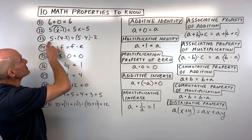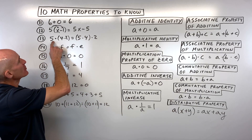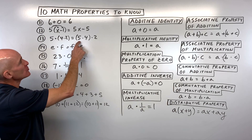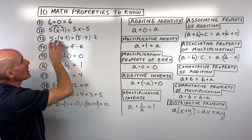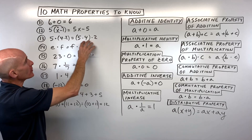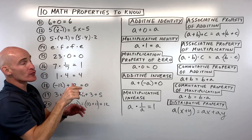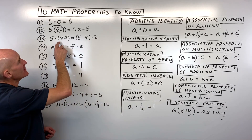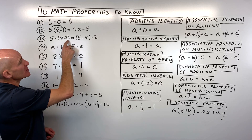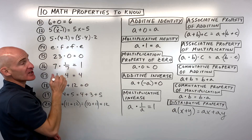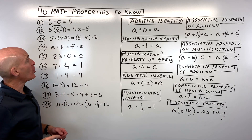For number 13: (5 × 4) × 2 = 5 × (4 × 2). Notice they're in the same order but the grouping has changed — the parentheses moved. Since we're multiplying, this is the associative property of multiplication.